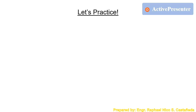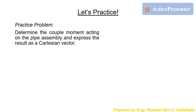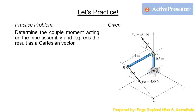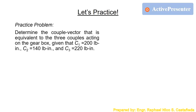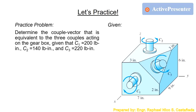Let's try some practice problems to check what you have learned in this video. We will have problems for couples and equivalent force couple systems. First: determine the couple moment acting on the pipe assembly and express the result as a Cartesian vector. Next: determine the couple vector equivalent to the 3 couples acting on the gearbox, given C1 = 200 pound-inch, C2 = 140 pound-inch, and C3 = 220 pound-inch.